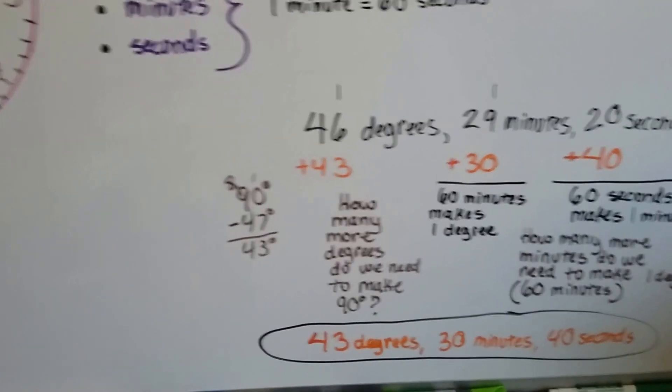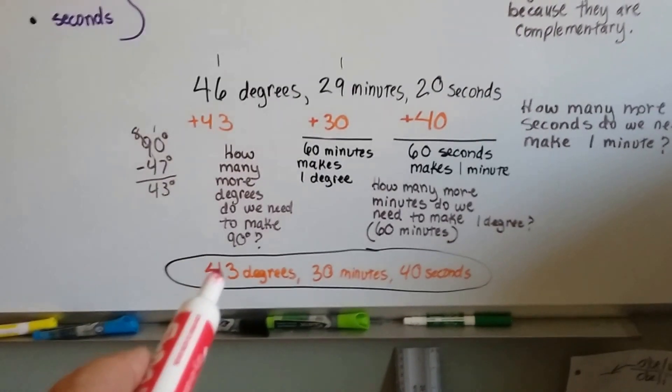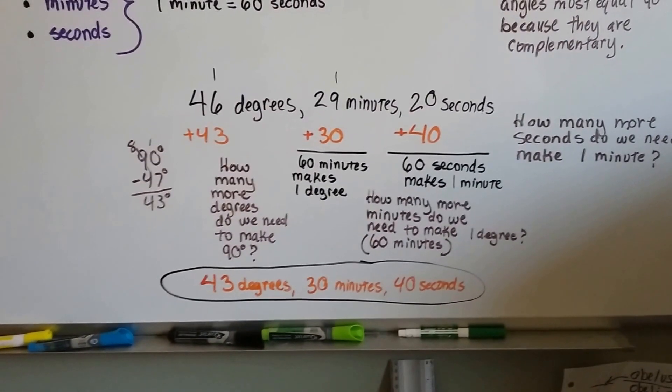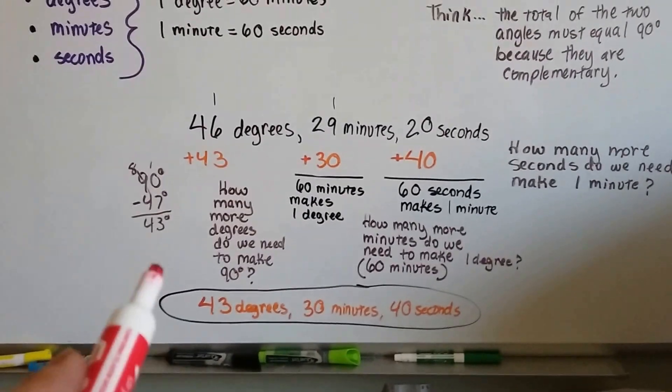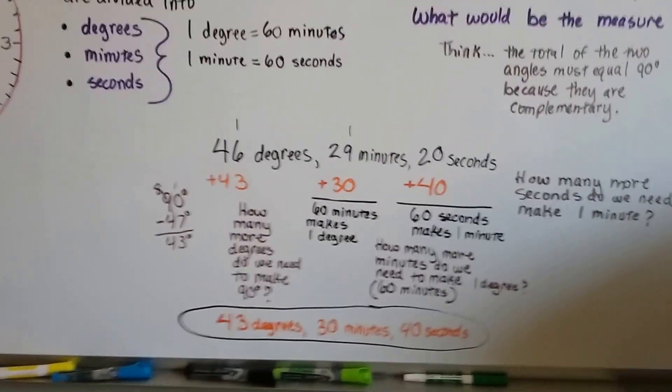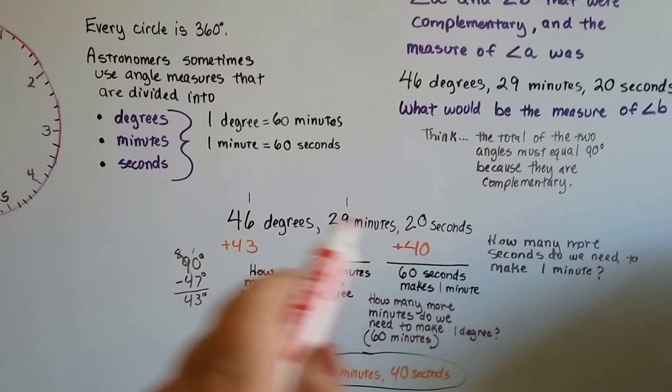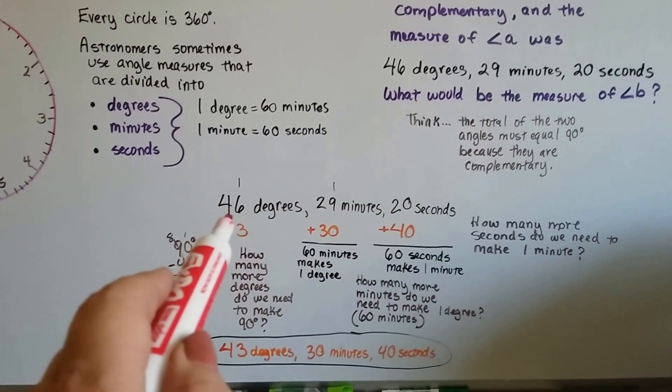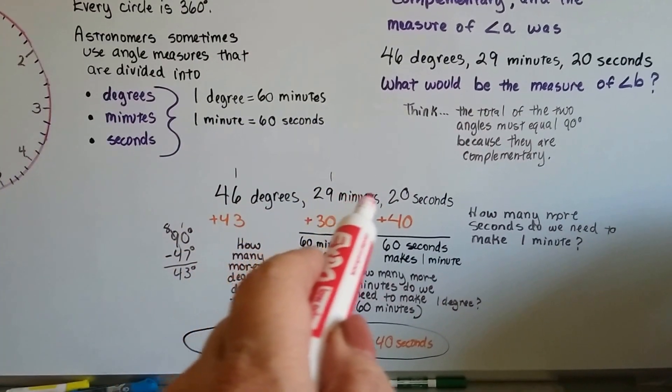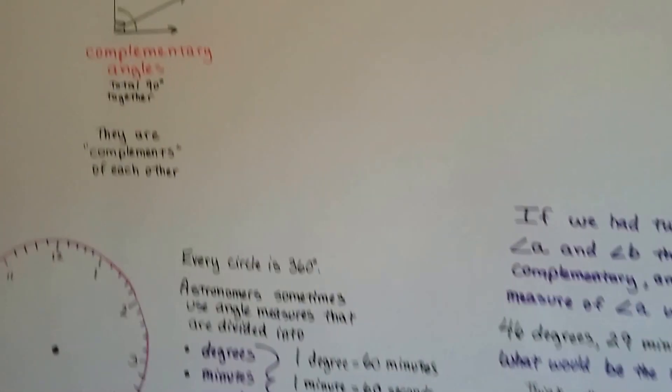So we've got our answer. The answer is 43 degrees, 30 minutes, and 40 seconds. That's what angle B would equal. Added together with the measures of angle A, the 46 degrees, 29 minutes, and 20 seconds, we'd have our complementary angles.